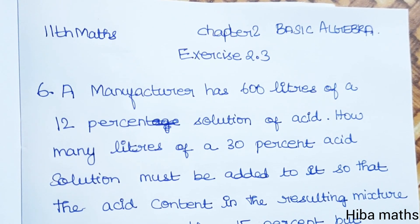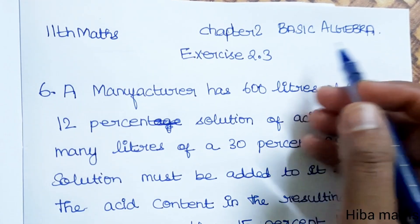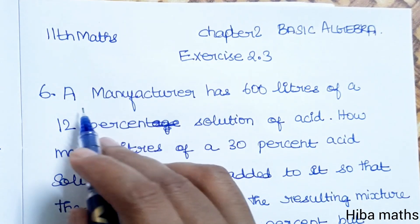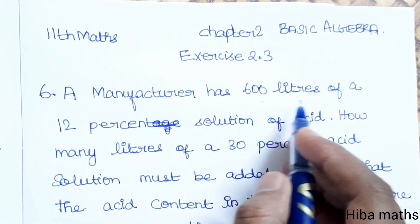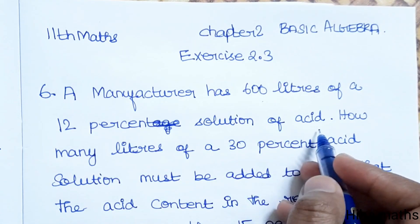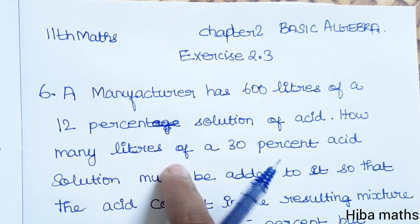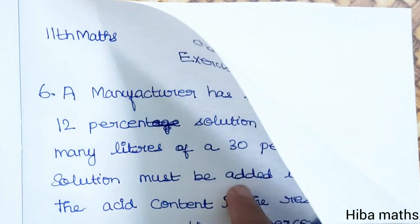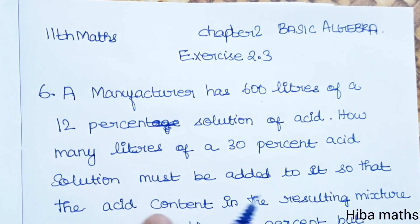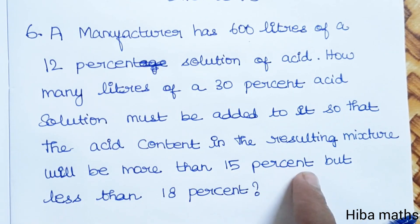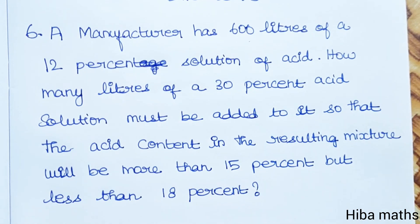Hello students, welcome to Ebamax 11th standard, Chapter 2 Basic Algebra, Exercise 2.36 question. A manufacturer has 600 liters of 12% solution of acid. How many liters of a 30% acid solution must be added to it so that the acid content in the resulting mixture will be more than 15% but less than 18%?